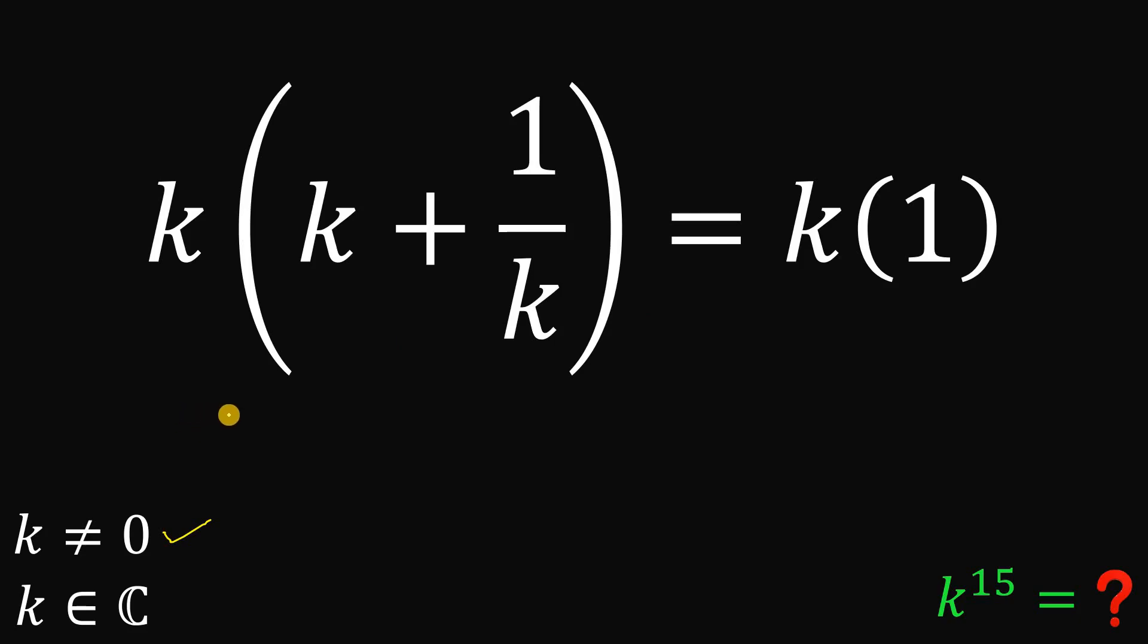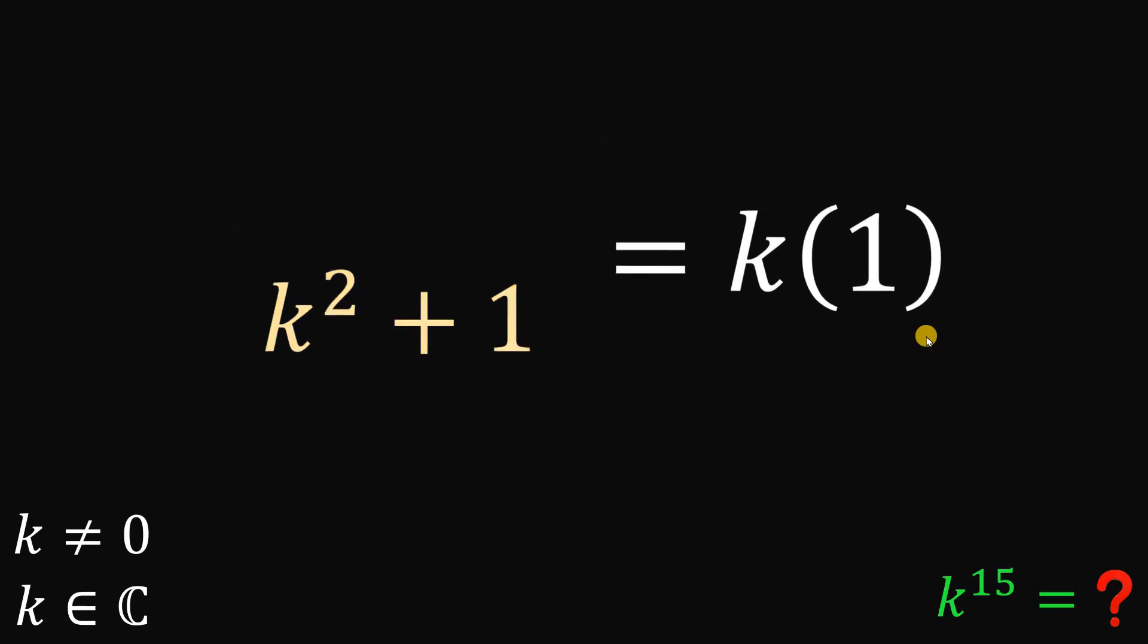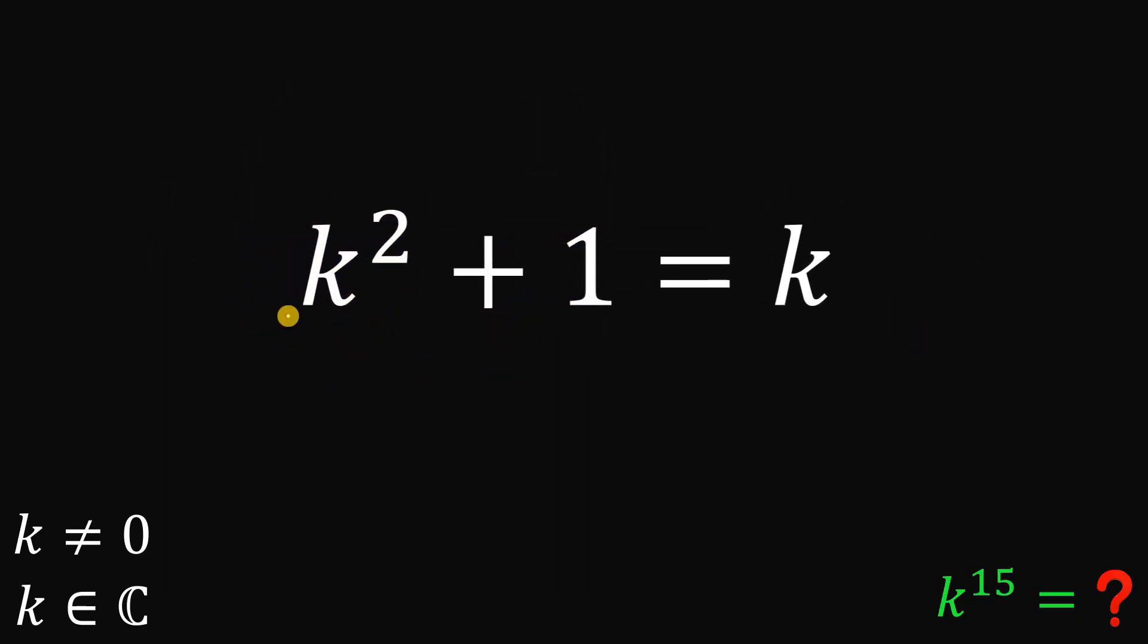Now, on the left-hand side, this is just k squared plus 1. And on the right-hand side, this is just k. Next, if we want to solve the value of k squared, just subtract 1 on both sides. So k squared equals k minus 1.